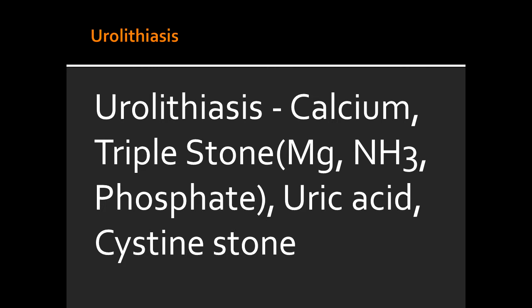Name some types of kidney stones that precipitate in acidic urine. The kidney stones that precipitate in acidic urine include uric acid stones and cysteine stones.